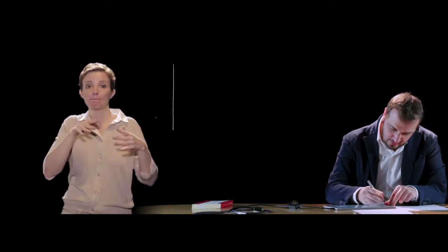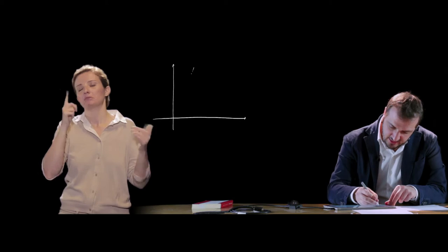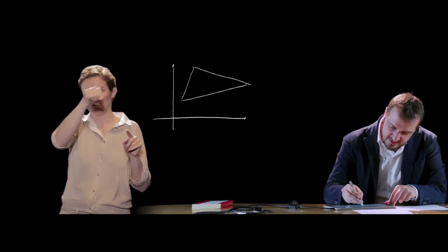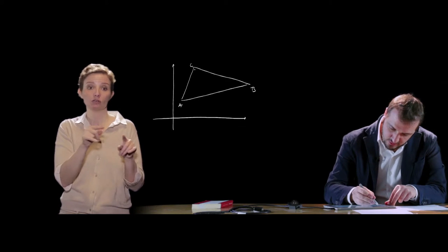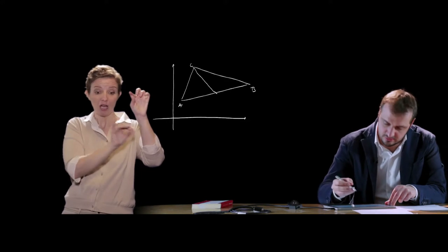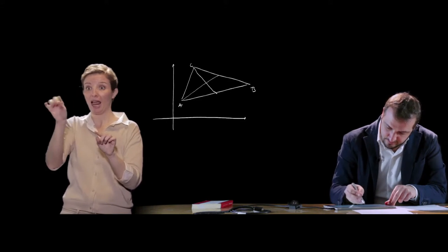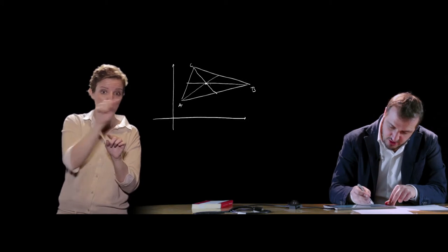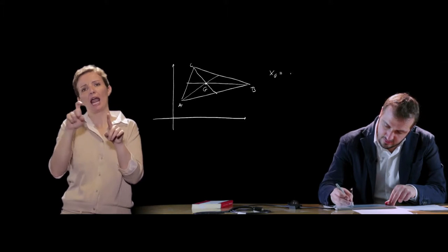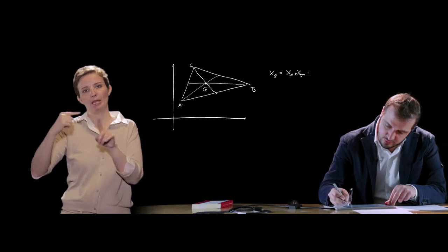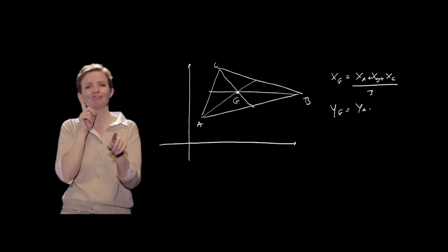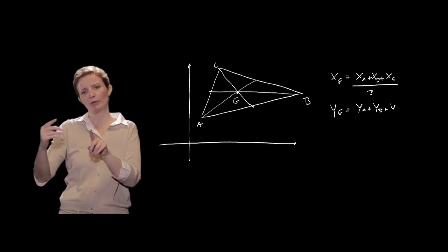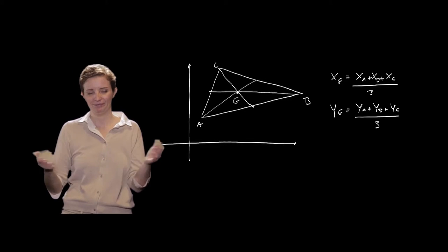Il baricentro in geometria analitica: definito un triangolo generico nel piano cartesiano con vertici A, B e C, il baricentro G — punto di intersezione delle mediane, che unisce ciascun vertice al punto medio del lato opposto — avrà come ascissa (xA + xB + xC) / 3, e come ordinata la somma delle ordinate dei tre vertici divisa per 3, ovvero (yA + yB + yC) / 3.